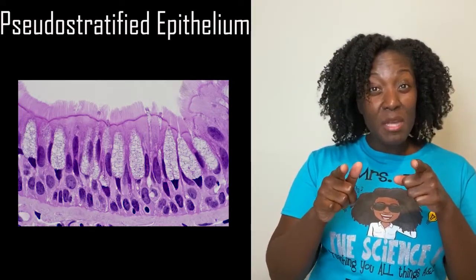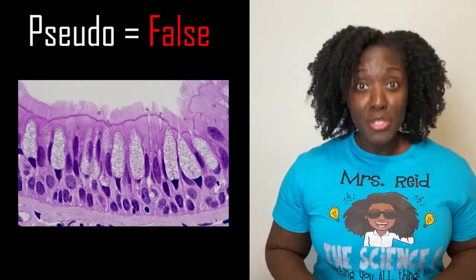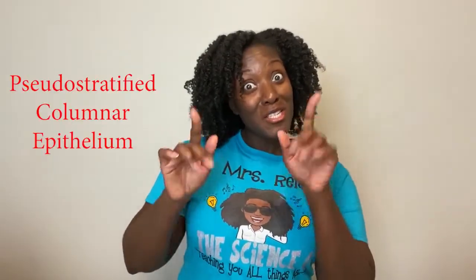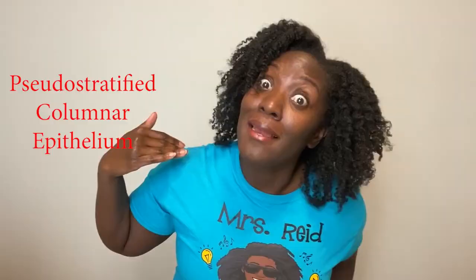I consider the last two tissues to be the remix to simple and stratified epithelium. Pseudo-stratified epithelium appears to be stratified, but it's really simple epithelial tissue with nuclei at different levels — pseudo means false. This tissue is covered in cilia and can be found in the nose, bronchi, or trachea. The last tissue is transitional epithelium, a remix of stratified. It's different because it stretches, and we can find this tissue in the bladder.